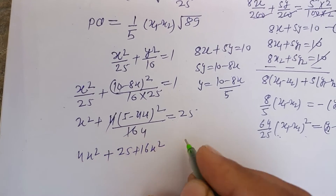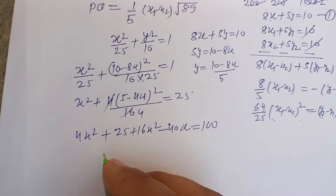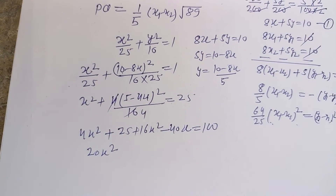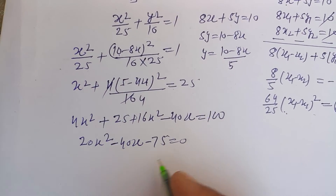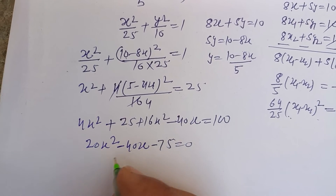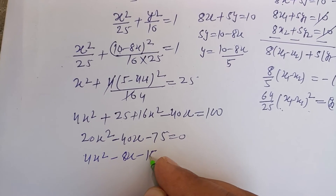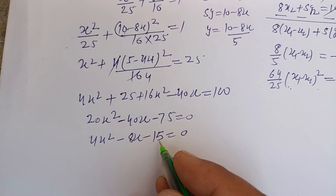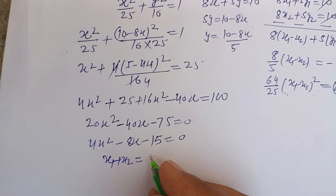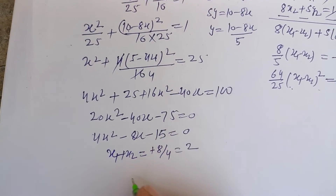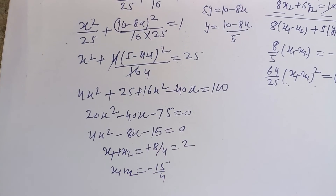Expanding (5−4x)²= 25 + 16x² − 40x and simplifying: 16x² + 25 + 16x²·4/16 − 40x... solving gives 20x² − 40x − 75 = 0, dividing by 5: 4x² − 8x − 15 = 0. This quadratic has roots x₁ and x₂, so x₁+x₂ = 8/4 = 2 and x₁x₂ = −15/4.